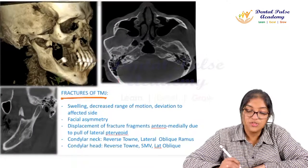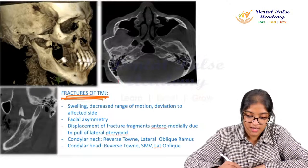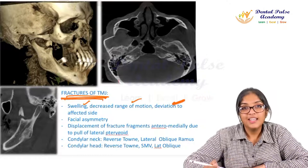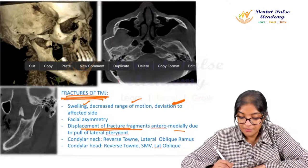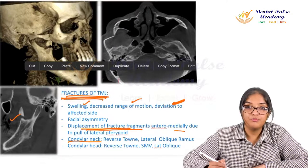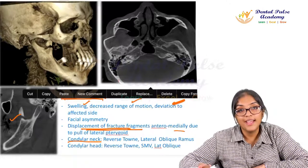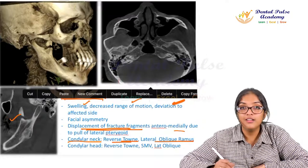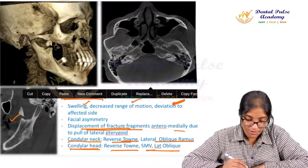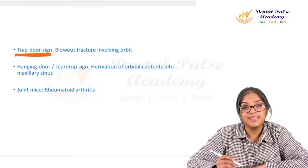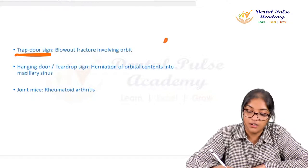Fractures of the jaw: condylar neck fractures present with swelling, decreased range of motion, deviation to the affected side, and facial asymmetry. Displacement of fragments occurs due to muscle pull. The best radiographic projections for condylar neck are reverse Towne's or lateral oblique ramus; for the condylar head, reverse Towne's or submental vertex. A traptosine is a blowout fracture of the orbit where tissue becomes entrapped in the orbital wall.